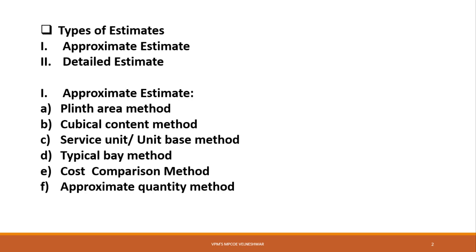The approximate estimation is prepared from practical knowledge and the cost of a similar type of work. The estimate is accompanied by a report explaining the necessity and utility of the project, along with the site or layout plan. A percentage of three to five percent is allowed for contingency.